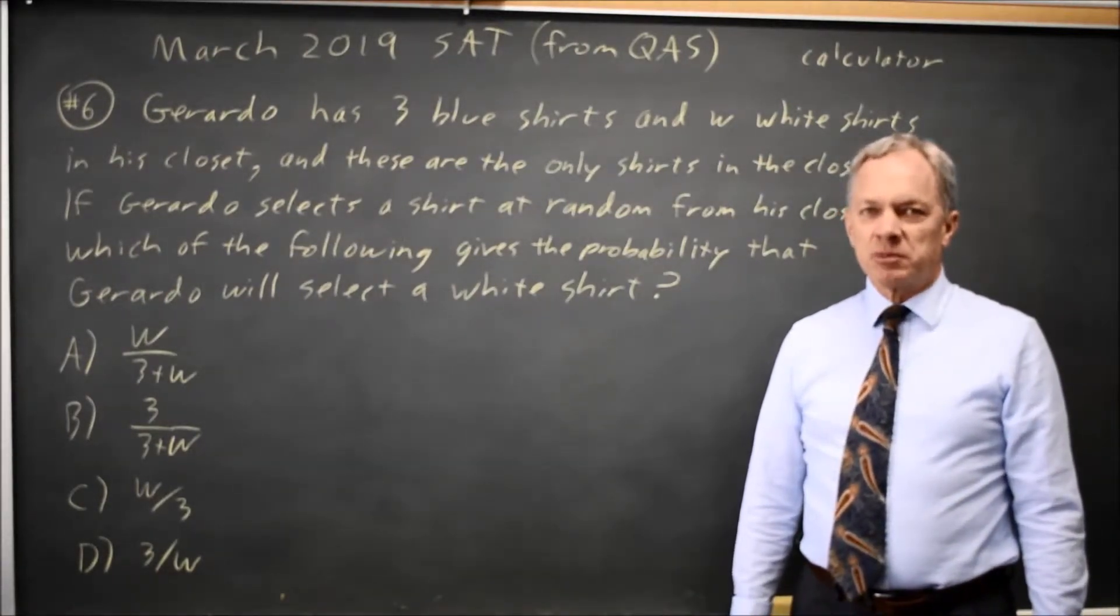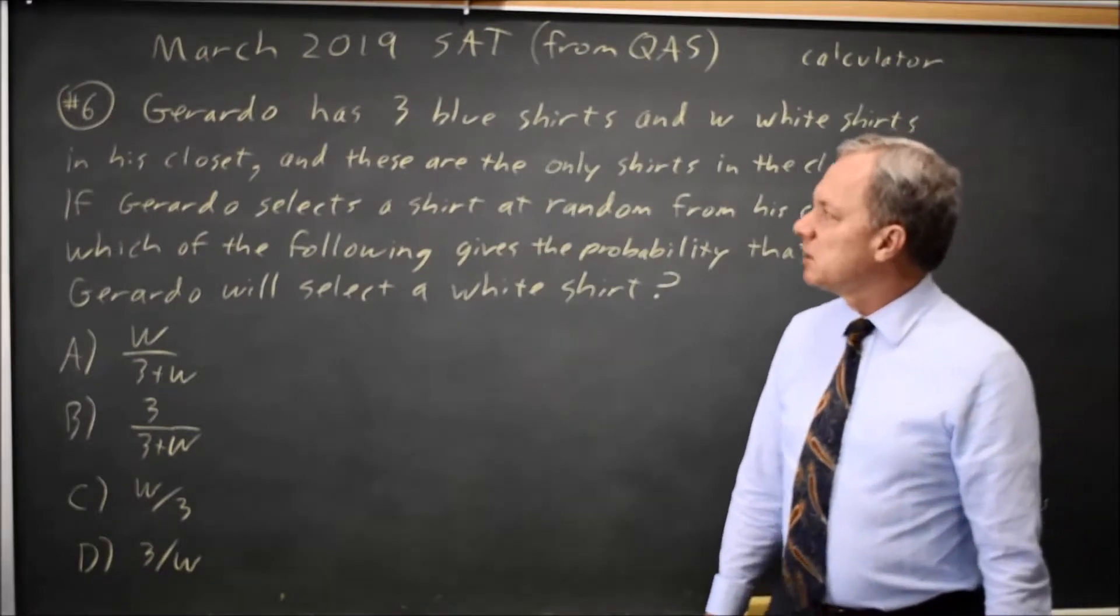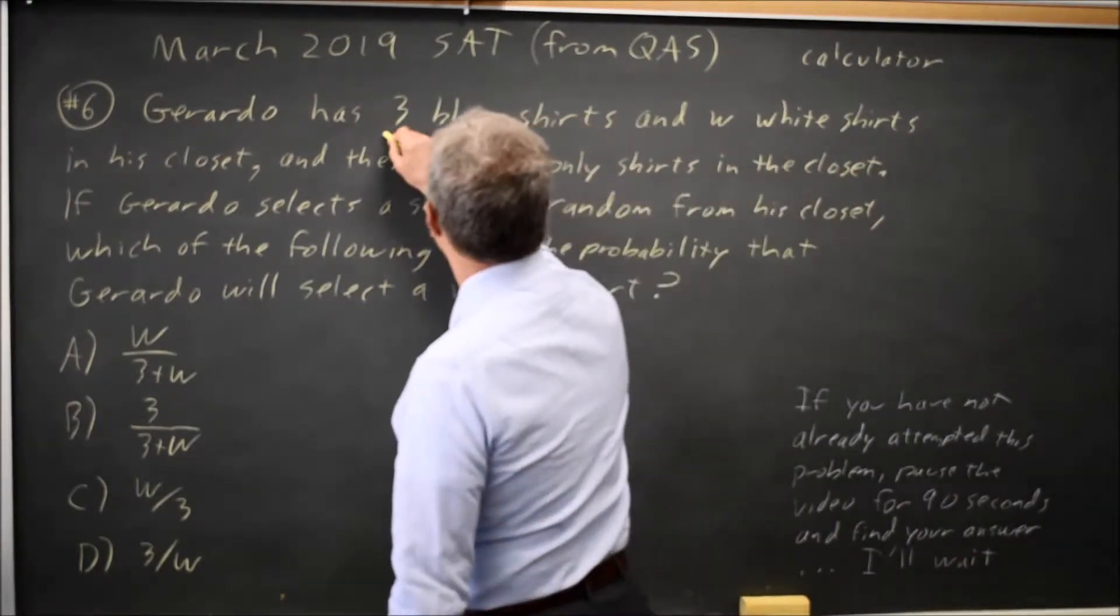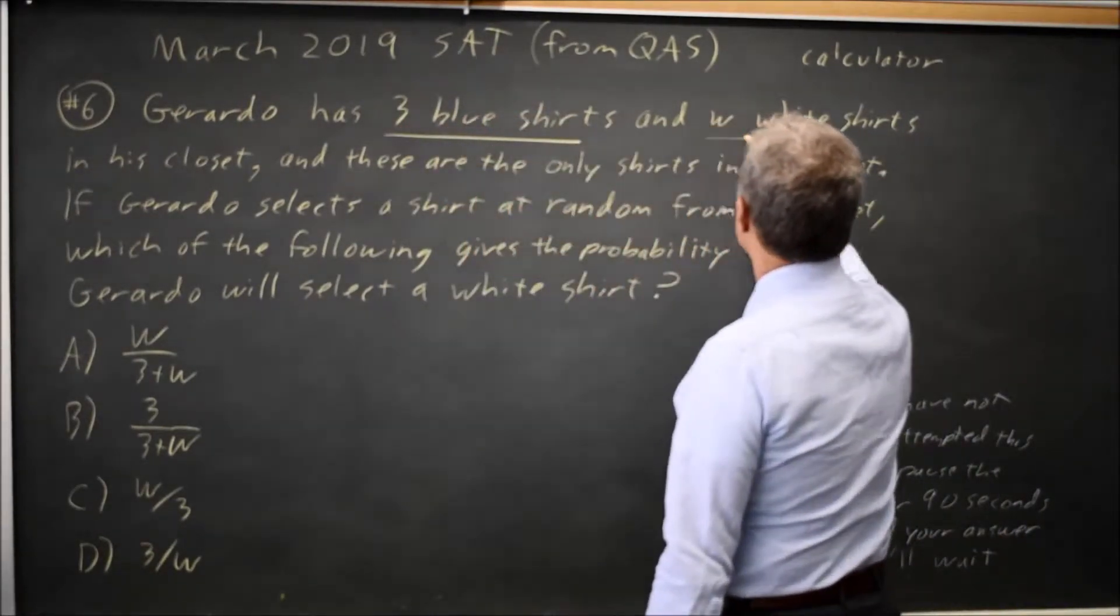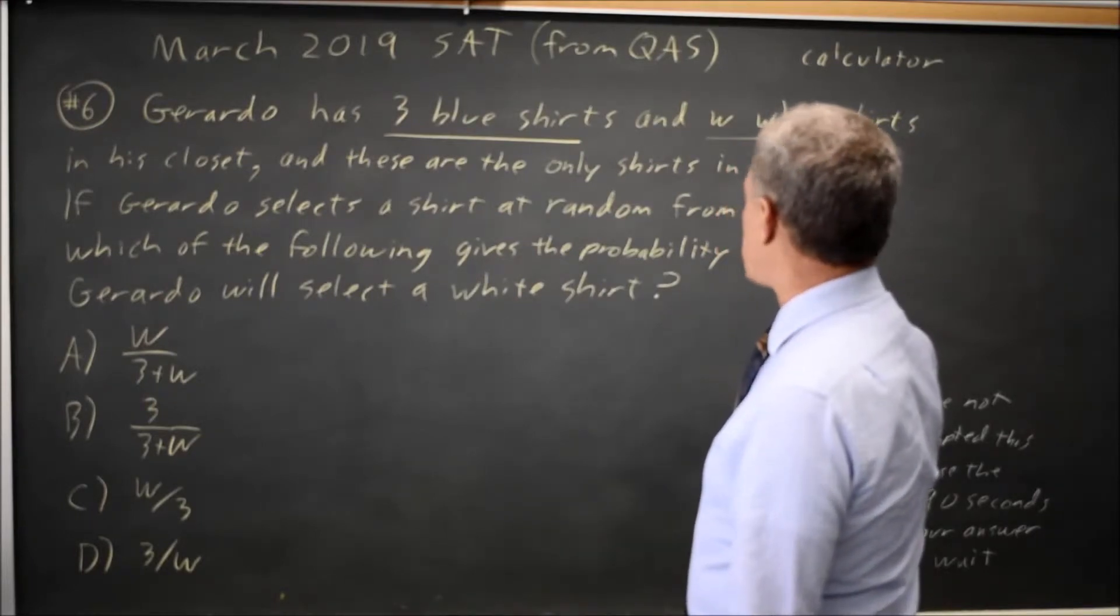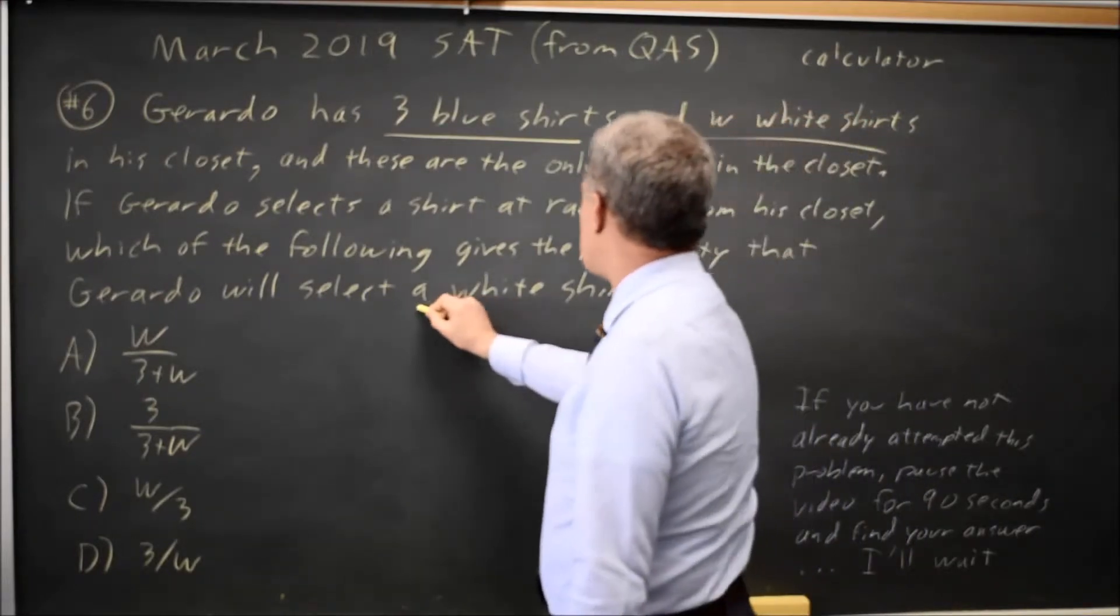The College Board gives us a word problem and asks for a probability. In the word problem, Gerardo has three blue shirts and W white shirts, and we want the probability that Gerardo will select a white shirt.